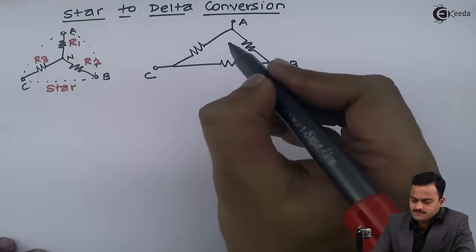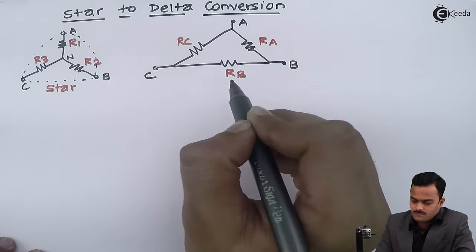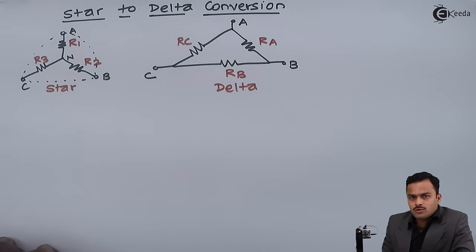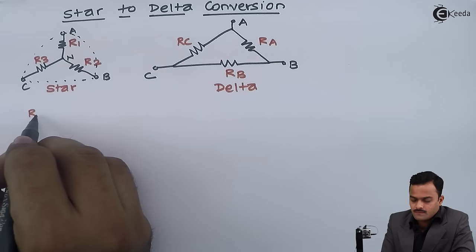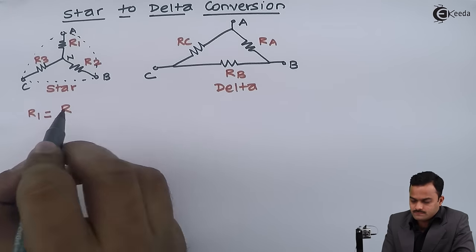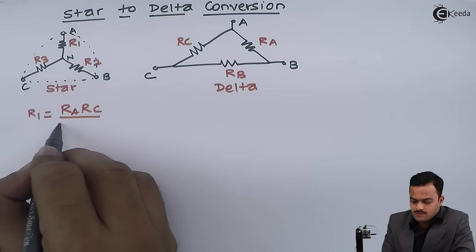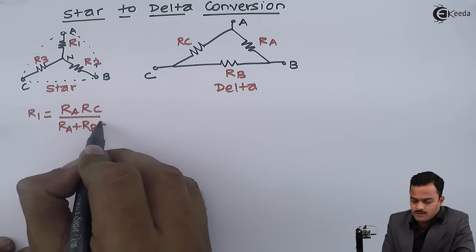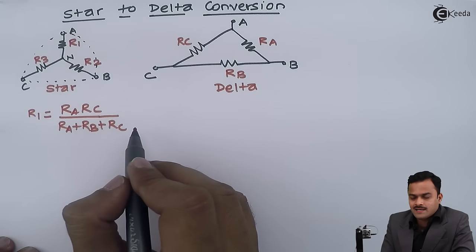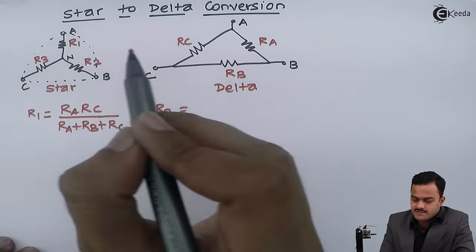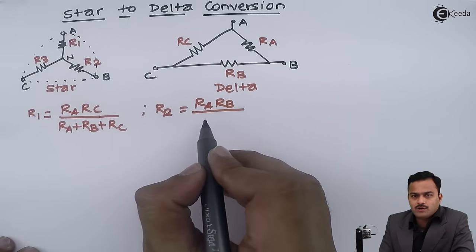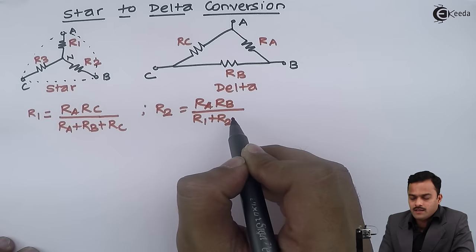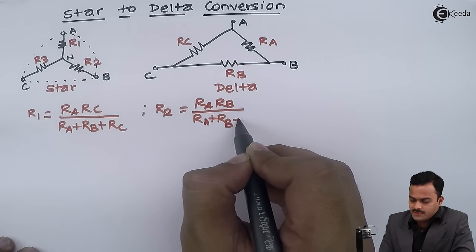I will name the resistors. In order to convert star into equivalent delta, I will use the relationship of delta to star conversion. If this delta is given and I am getting a star out of it, then R1 is given as RA·RC divided by RA plus RB plus RC, and R2 is given as RA·RB divided by RA plus RB plus RC.